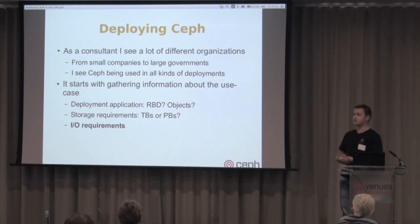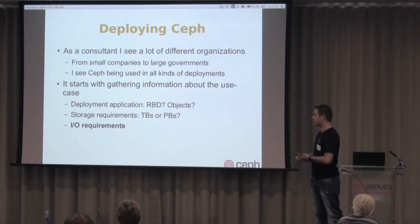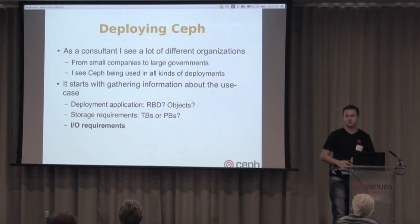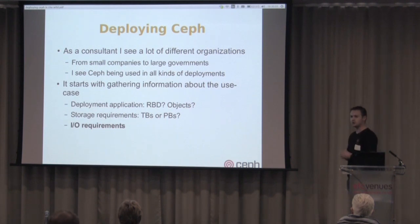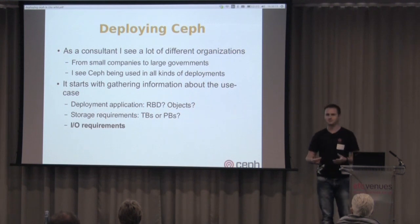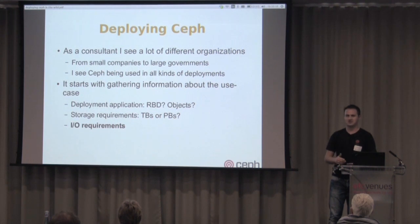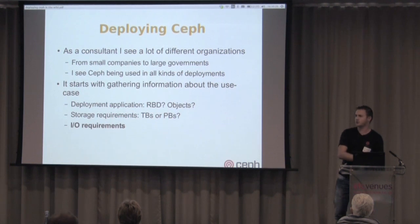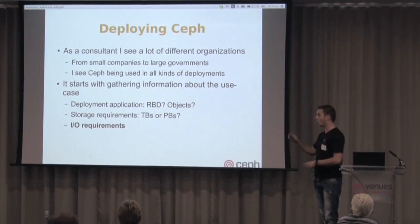It all starts with gathering information about your deployment. Do you want to deploy RBD — cloud with virtual machines — or do you want to store objects like images or movies? Then the capacity requirements: terabytes or petabytes? And then the IO requirements. IO is printed bold because nobody thinks about it. They always say 'we need 300 terabytes,' but when I ask how much IO they need, they have not a single clue. Slowly as we work through the process, we figure out they actually need a lot of IO and not that much storage.